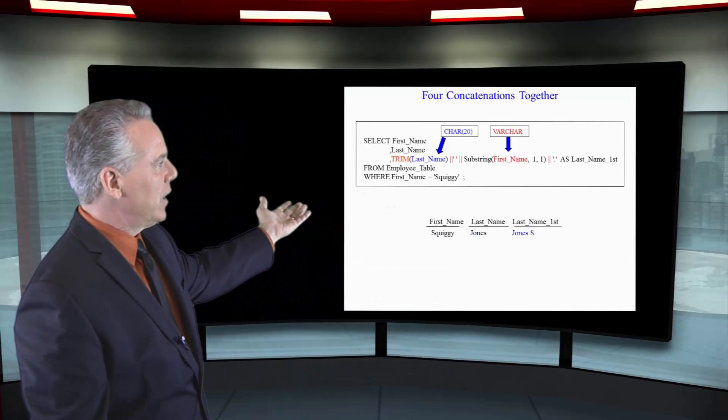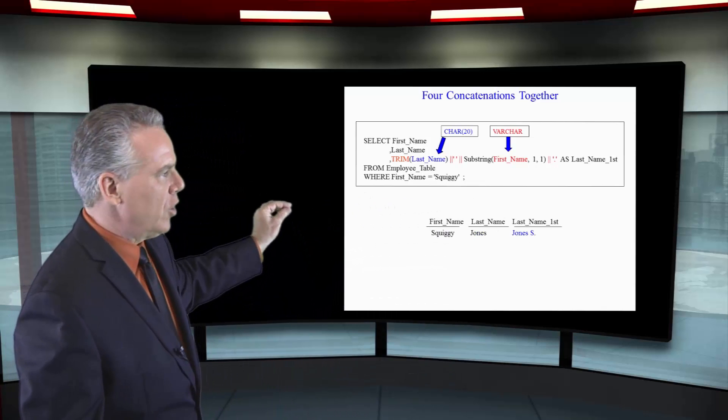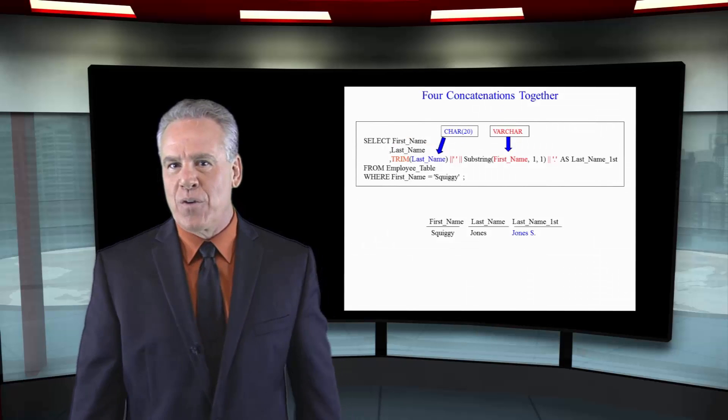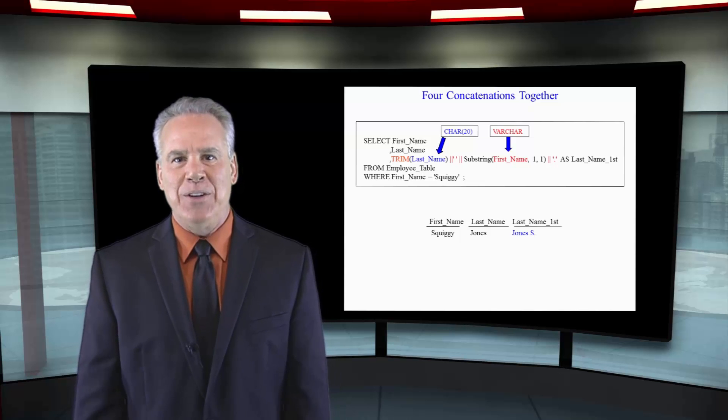We're going to have to do many things together to get this done. We select the first name, we select the last name. Then we're going to trim the last name because we've got to get rid of those spaces on that CHAR 20. Now we've got Jones. Then we're going to concatenate that with a single space. Then we're going to concatenate that even further with a substring of first name from one for one, and that's how we do it.